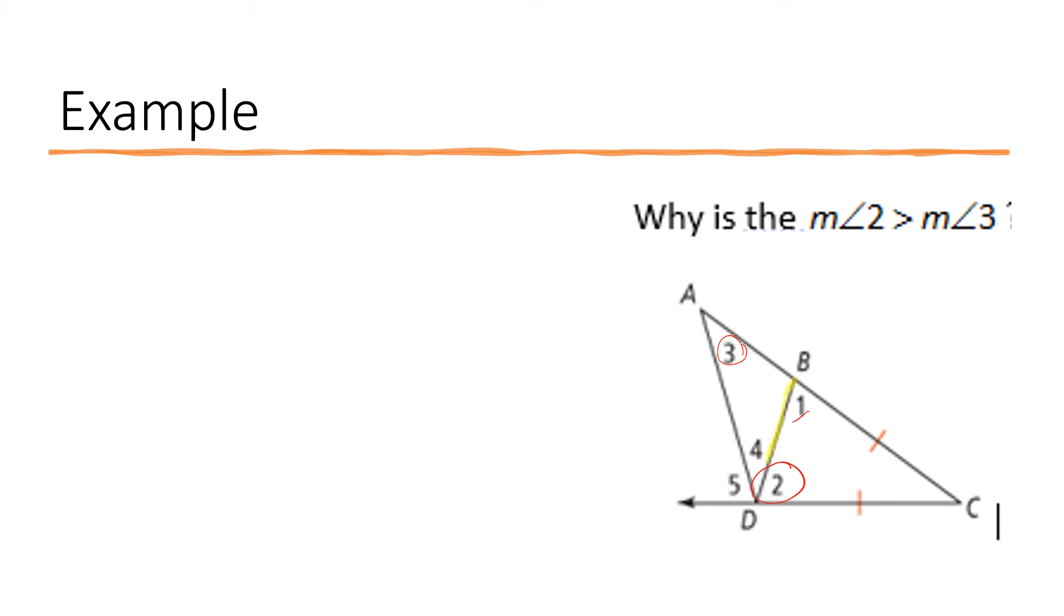So if I take a look at this triangle right here, okay, angle one is a remote exterior angle, right? In the last corollary, we said that measure of angle one has to be greater than the measure of angle three. Okay.